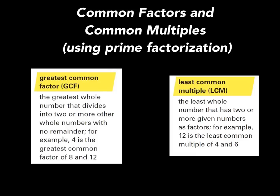Let's quickly review the greatest common factor and the least common multiple. The greatest common factor is the largest whole number that divides evenly into two or more whole numbers with no remainder. For example, 4 is the greatest common factor of 8 and 12 because 4 divides nicely into both 8 and 12, and it's the largest number to do so.